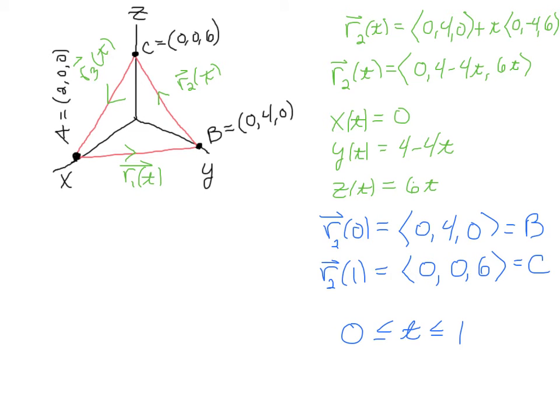We could do this for R₂, and here's what it would look like. So I just combine these vectors, and I have ⟨0, 4 - 4t, 6t⟩. And then once again, I just say X = 0, Y = 4 - 4t, and Z = 6t.